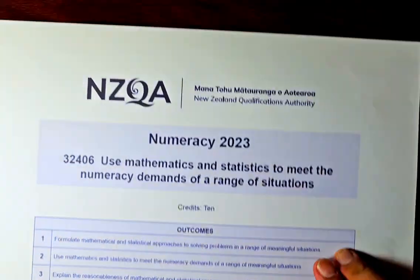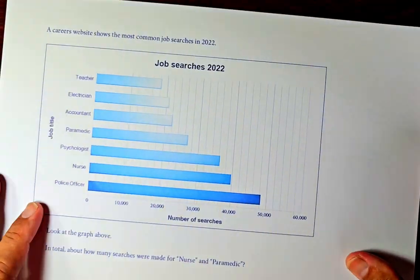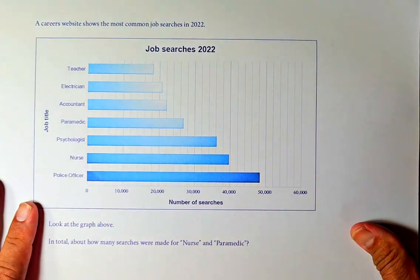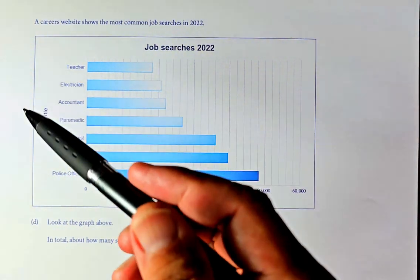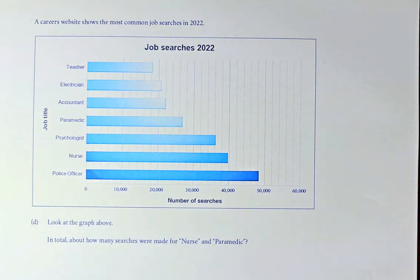Okay, we shall break the paper. And 1D looks like this. I'm going to adjust the paper for a bit now. Okay, we shall read the question now. A career website shows the most common job search in 2022. So there are teacher, electrician, accountant, paramedic, psychologist, nurse and police officer. So you're asked to look at the graph, you need to interpret the graph.